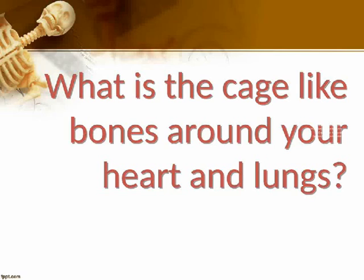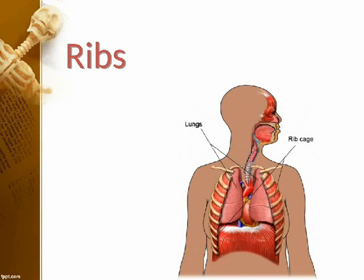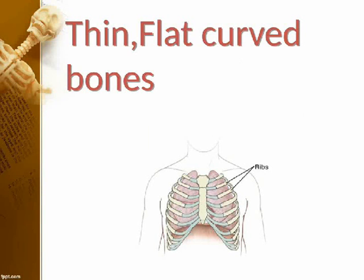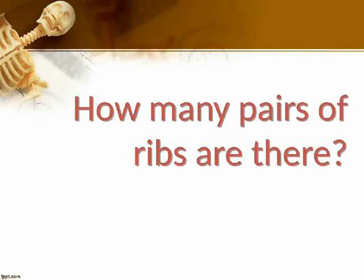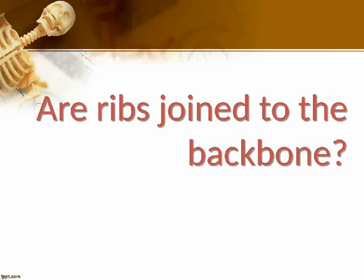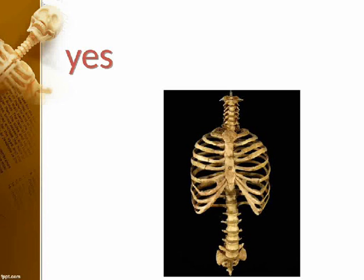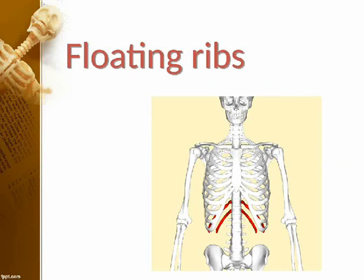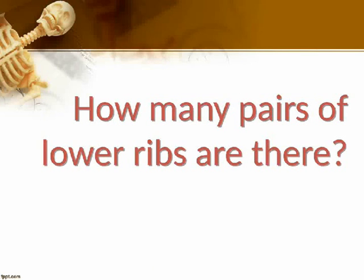What are the cage-like bones around your heart and lungs? Ribs. How are ribs? Thin, flat, curved bones. How many pairs of ribs are there? 12. Are ribs joined to the backbone? Yes. The lower ribs that are not attached are called floating ribs. How many pairs of lower ribs are there? 2.